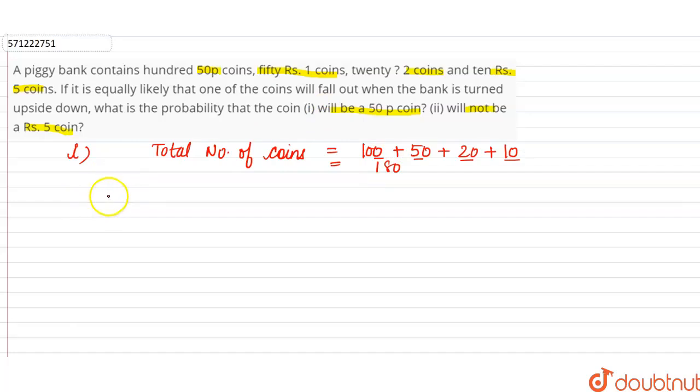Now in the question, it is asked to find the probability that the coin will be fifty paise. To find the probability of an event, the formula is number of favorable outcomes divided by total number of outcomes. So fifty-paise coins are...